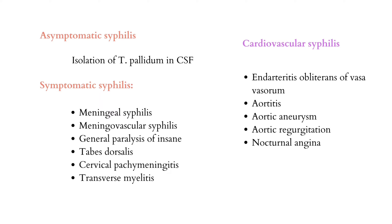In cardiovascular syphilis, it occurs 10–40 years after infection. We find endarteritis obliterans of the vasa vasorum of the ascending aorta and aortic arch, with medial necrosis and destruction of the elastic tissue. Along with this we can see aortitis, aortic aneurysm, aortic regurgitation, coronary artery involvement, and ostial stenosis.